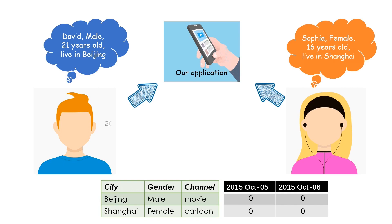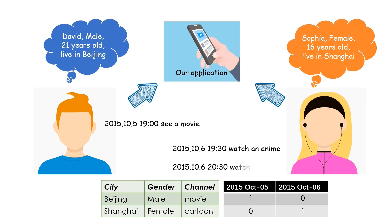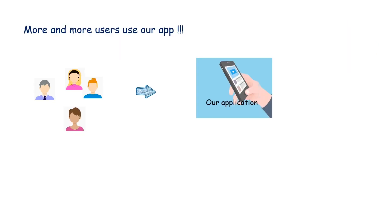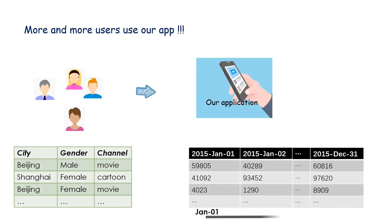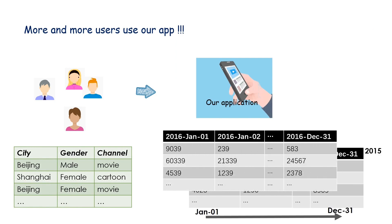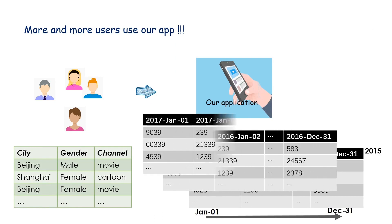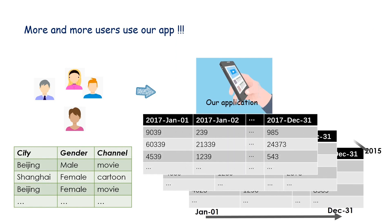David saw a movie on October 5th. On the next day, Sophia watched two anime. We recorded three visits in the table. Records were accumulated in our table from January to December. Year after year, records grow in a similar pattern.